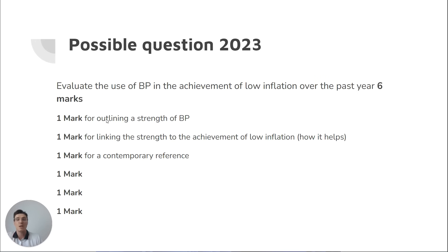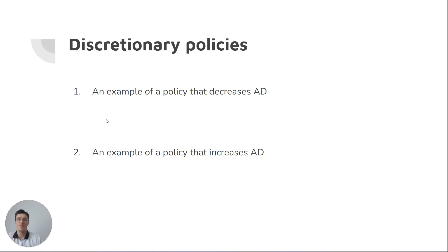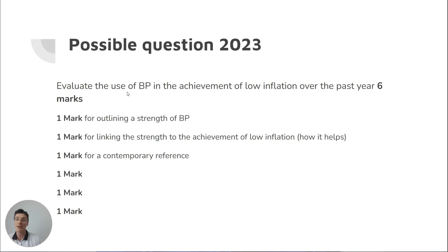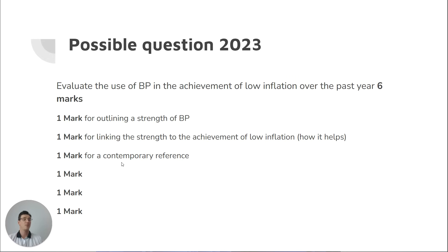VCAA could ask you to explain how these policies work to affect a goal, or — what I think is a more difficult question — evaluate the budgetary policies over the past year. I would highly encourage you to include a contemporary reference. So you might say one strength of budgetary policy is it can target areas of weakness in the economy, then make the standard argument, and bring in for example the bill relief that the government introduced over 2022-23 as an example of this.